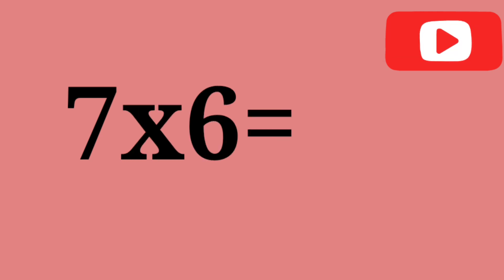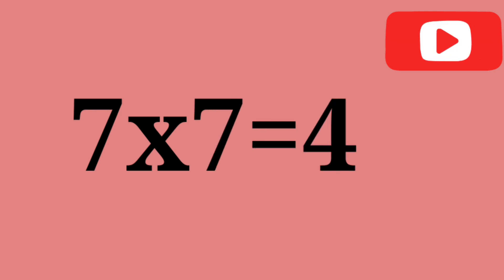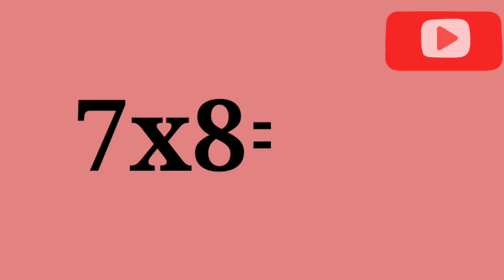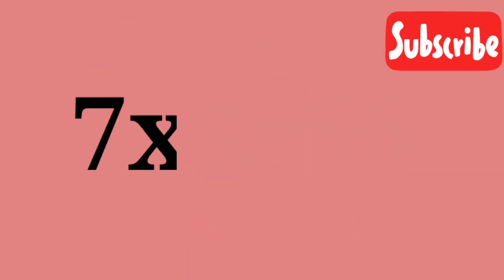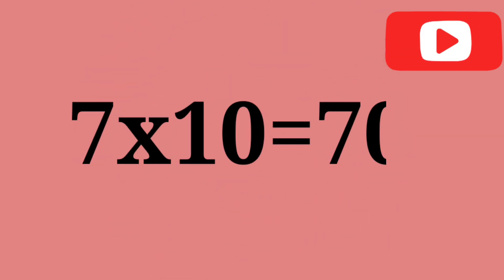7 sixes are 42. 7 sevens are 49. 7 eights are 56. 7 nines are 63. 7 tens are 17.